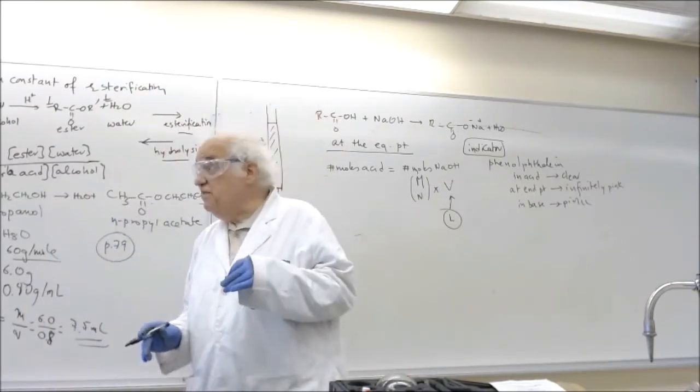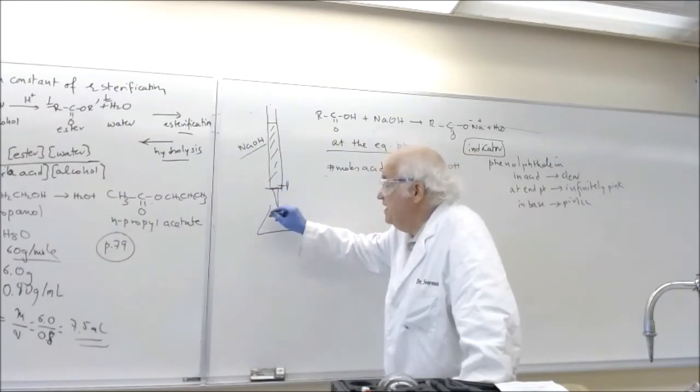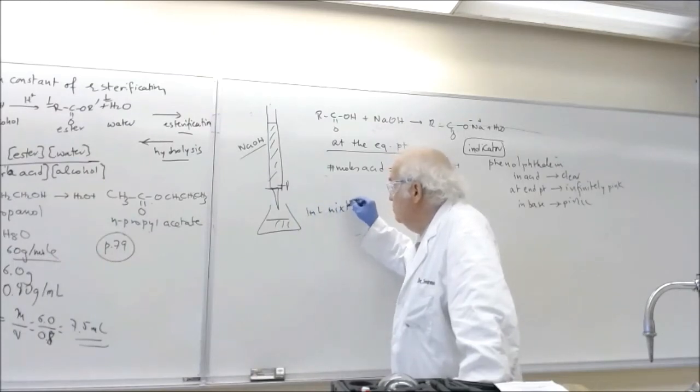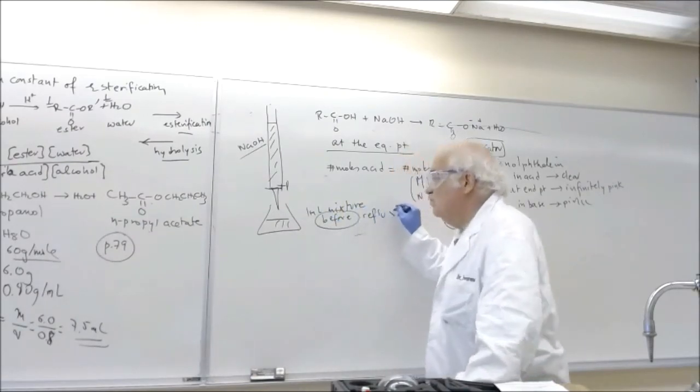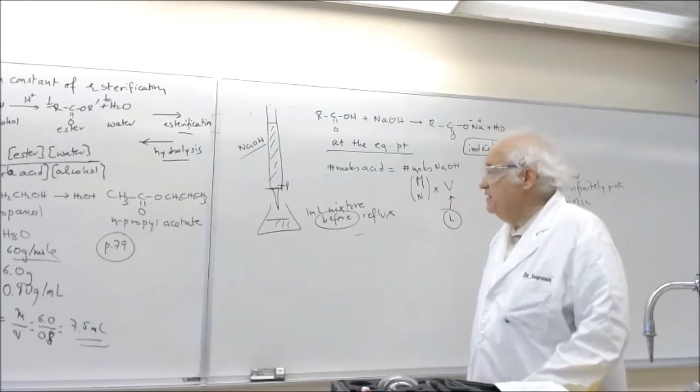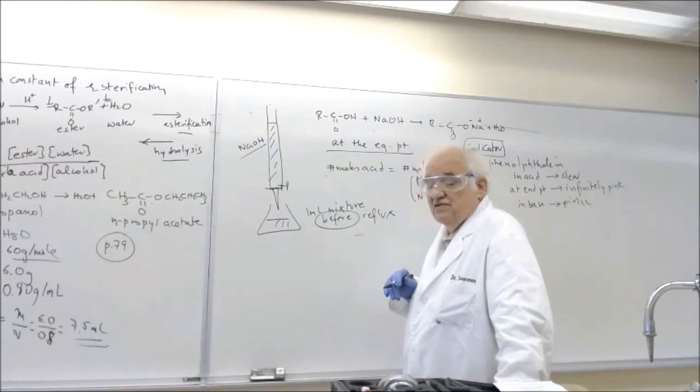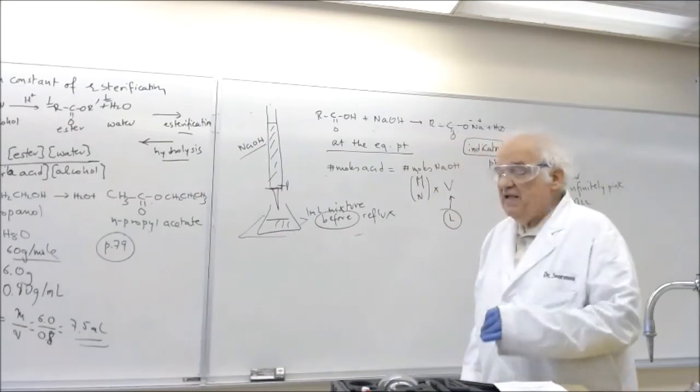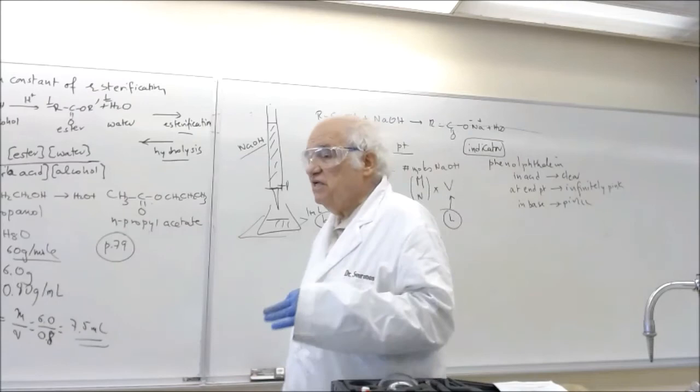And so therefore what we do then is we perform the titration. And we have a conical flask here, where we have one milliliter of mixture before reflux. And you have here the phenolphthalein plus the acid. And then you add, and a piece of paper, white paper under, right? And you take one milliliter, and you take the rest of it, and you start refluxing it.